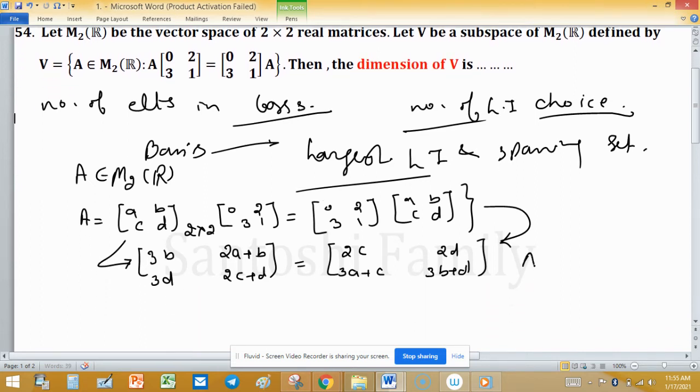Now by equality of two matrices we have: 3b = 2c, 2a + b = 2d, 3a + c = 3d, and 3b + d = 2c + d.